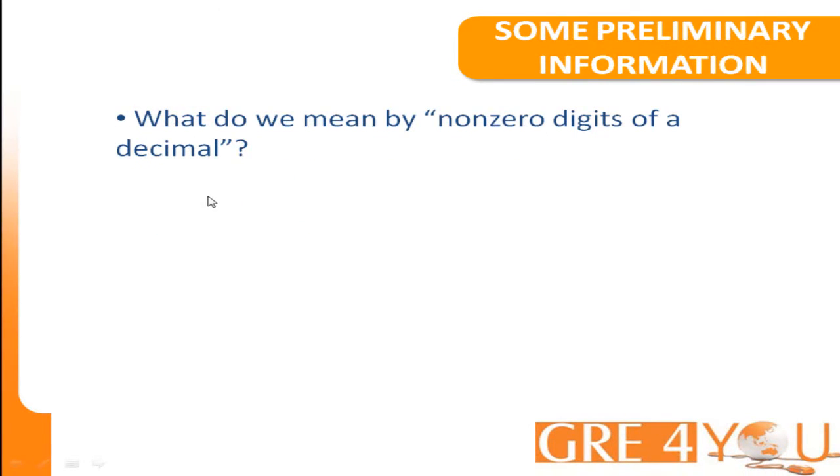What do we mean by the term non-zero digits of the decimal? Suppose I have a decimal number such as 0.00121. It has three non-zero digits, and that's what I'm referring to. Suppose I were to have a number such as 0.01. This has one non-zero digit.